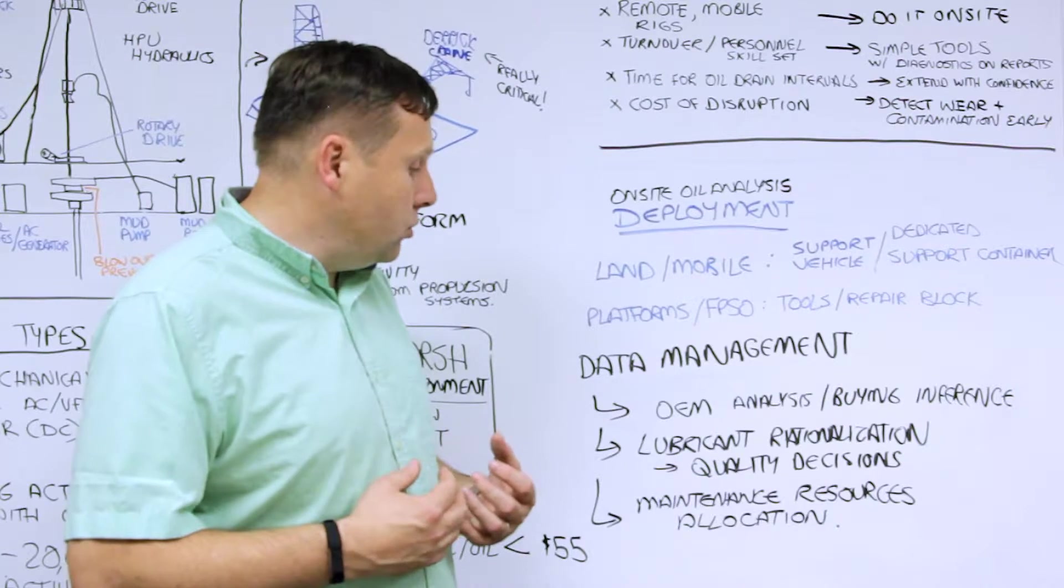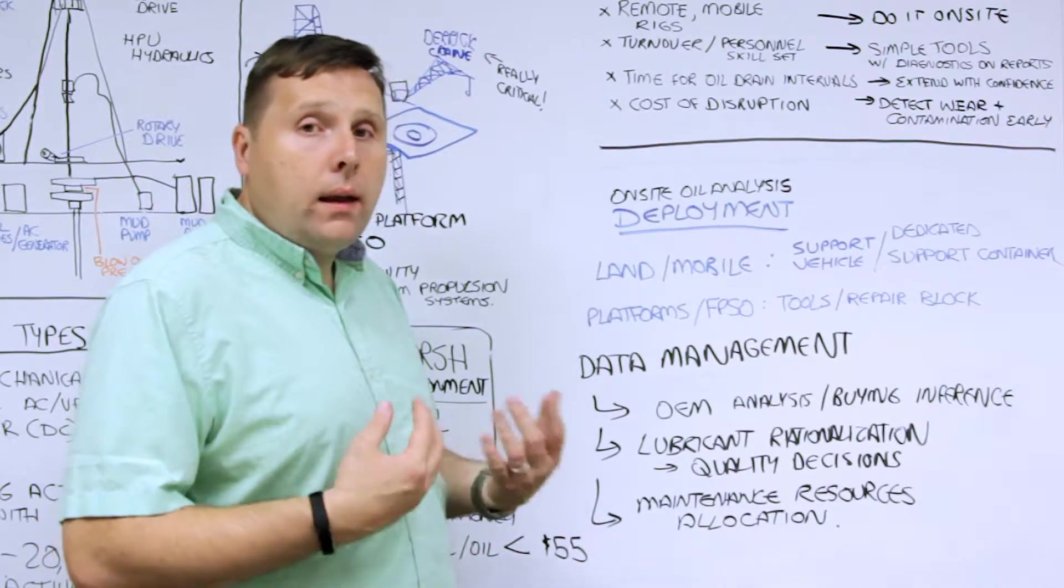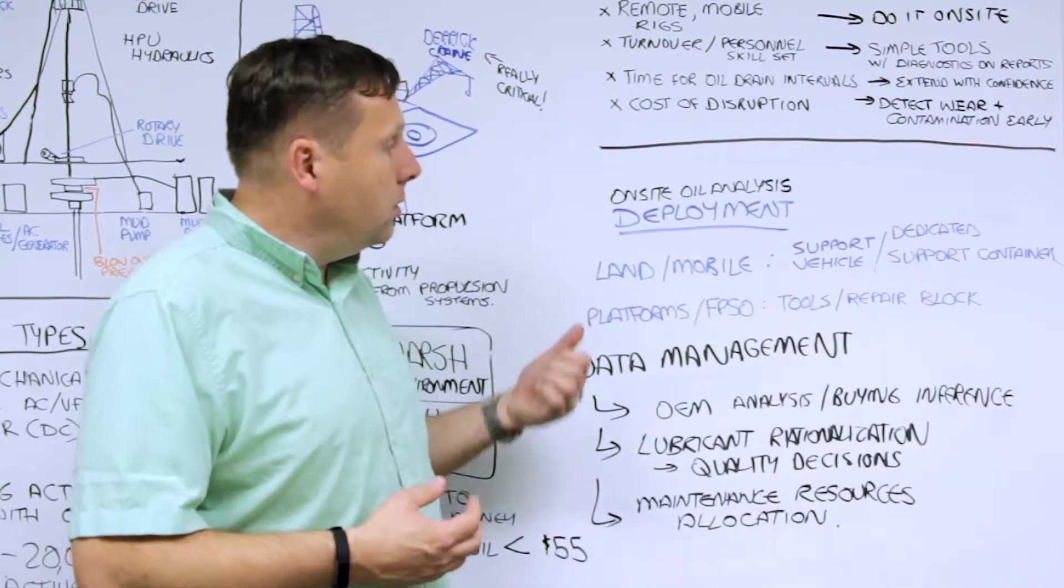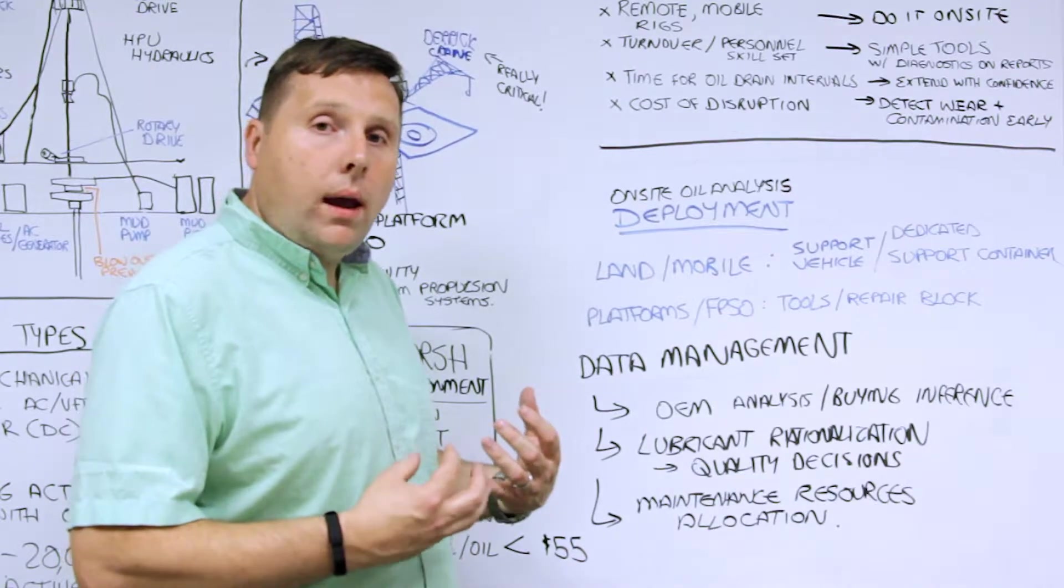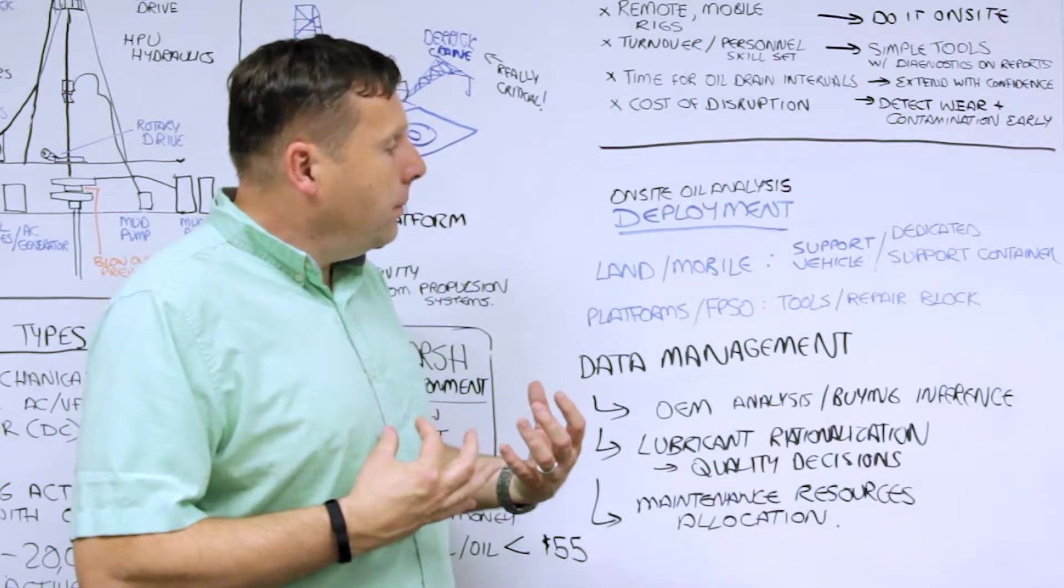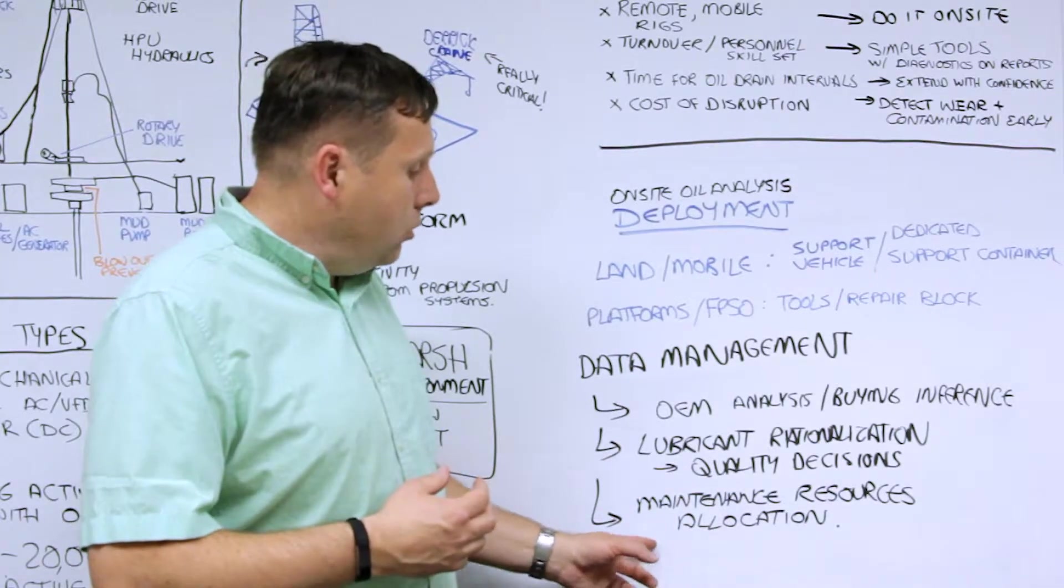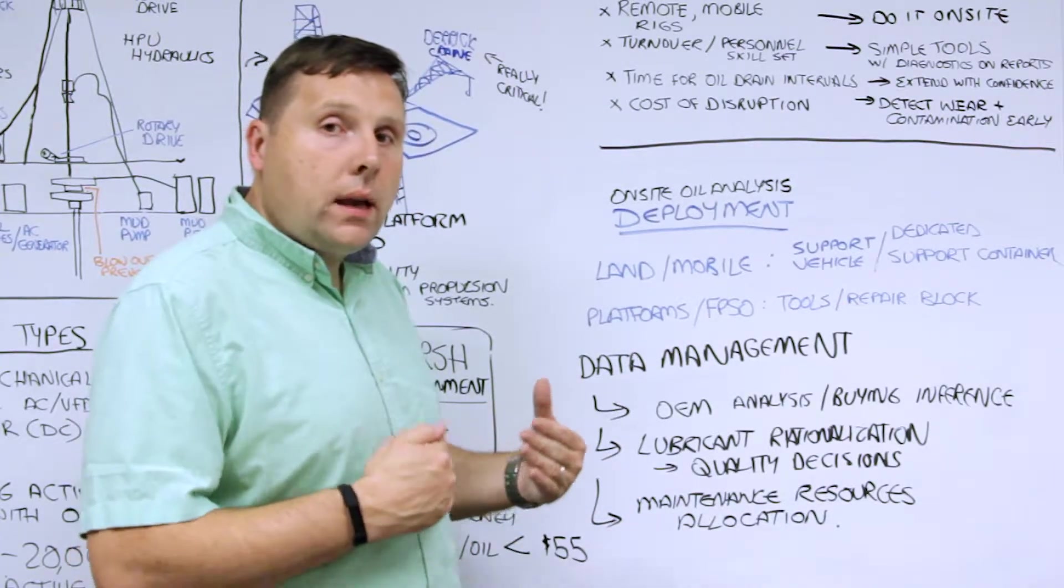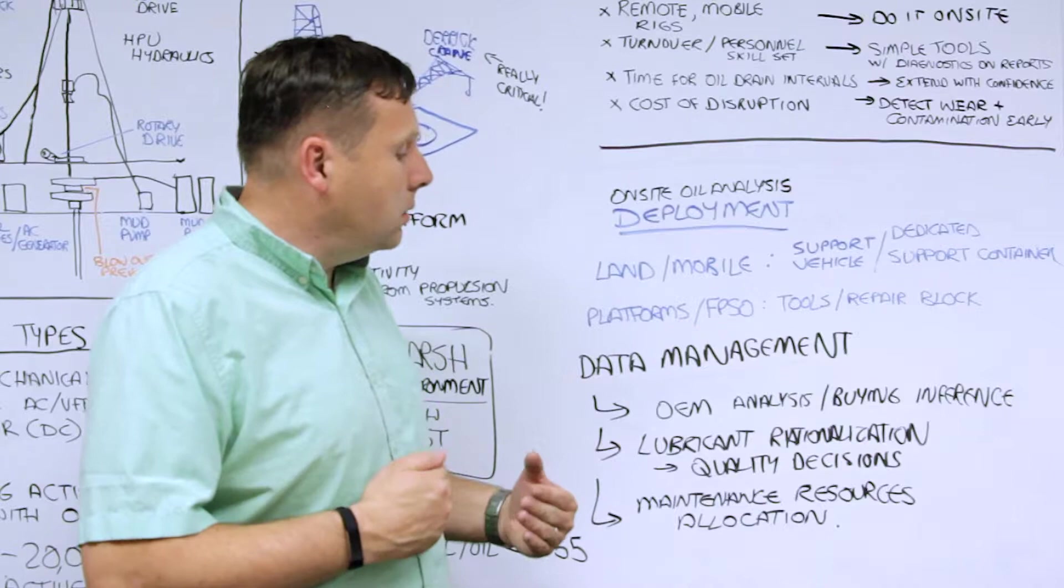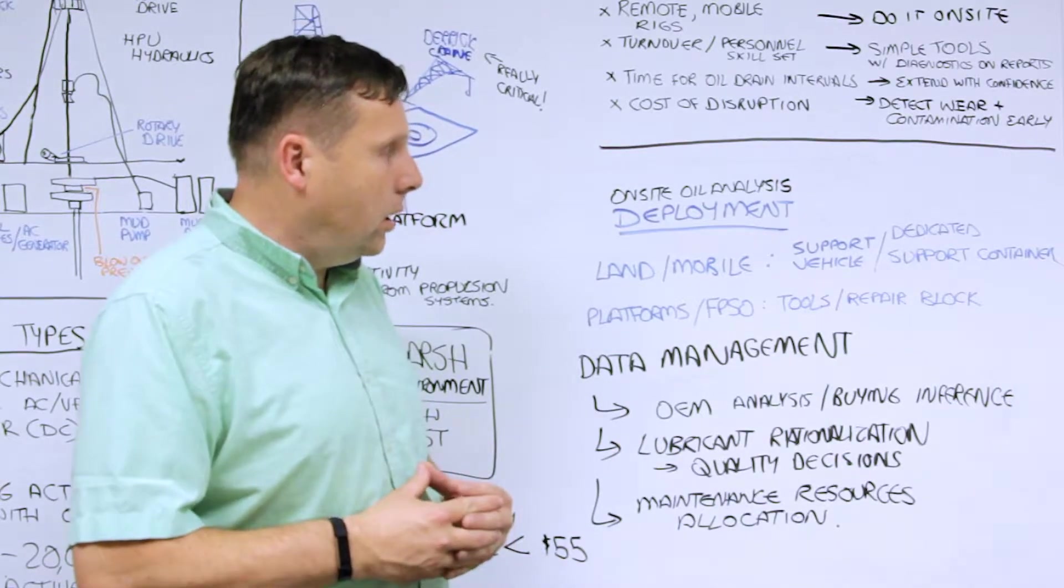Quality decisions are a major issue. Maintenance resource allocation is another major issue. What happens is if you know when the equipment is about to break down, then you can organize and allocate your resources to be able to look at when you need to have that done.